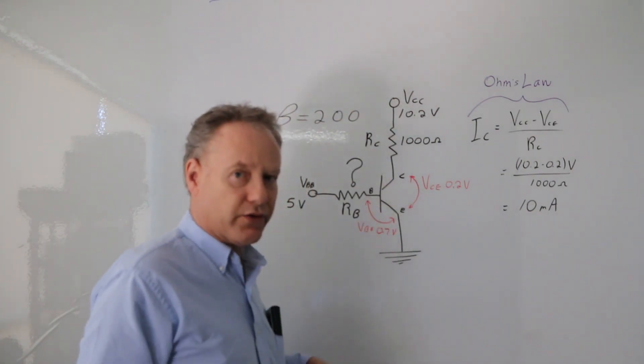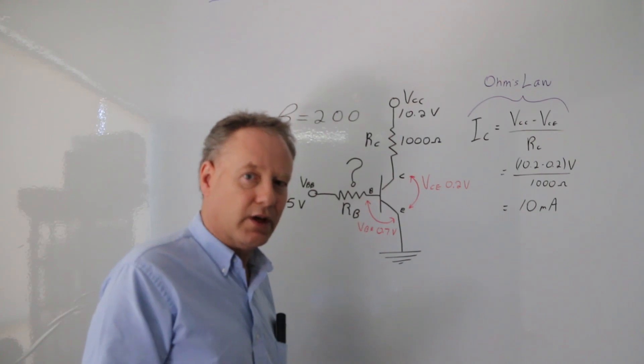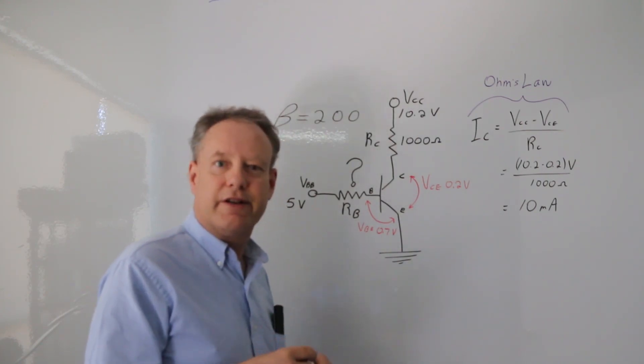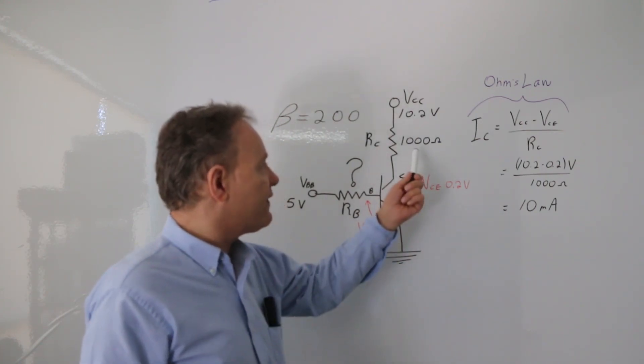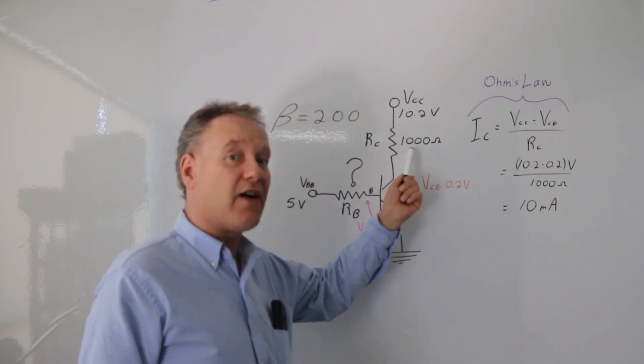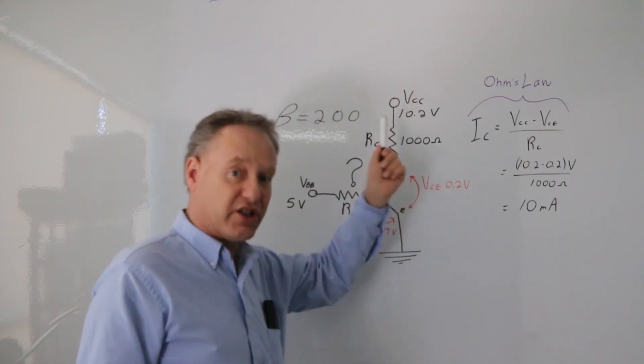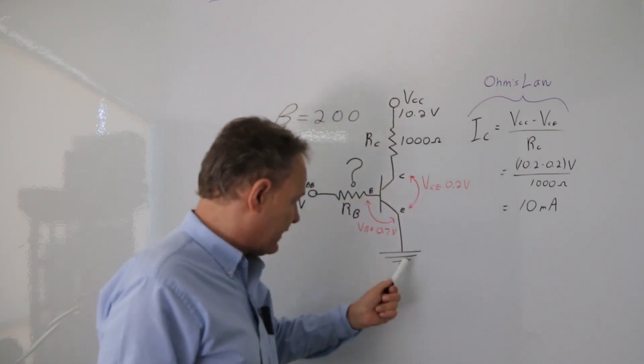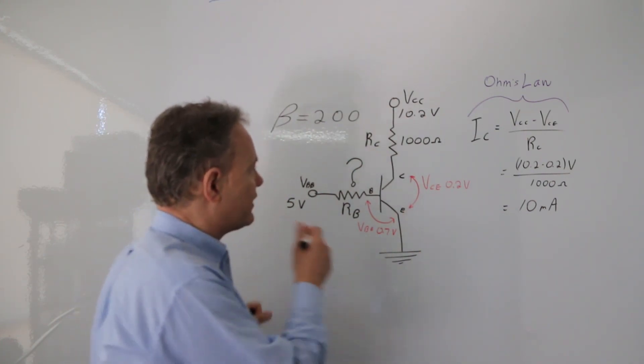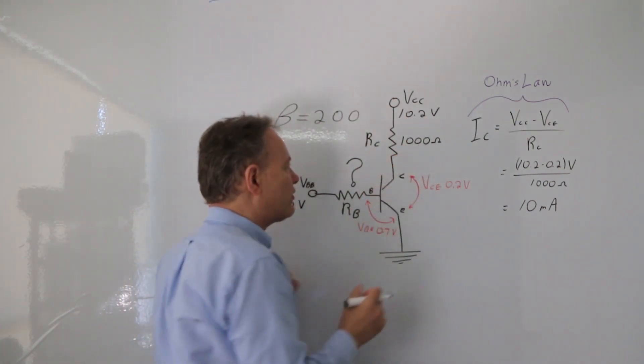But how much current do I need to go through there? Well, I look at this and say I have a certain amount of resistance here that's drawing current down to the ground. So how do I calculate the current going through there? Well, I just lean on Ohm's law.